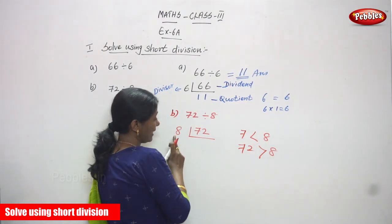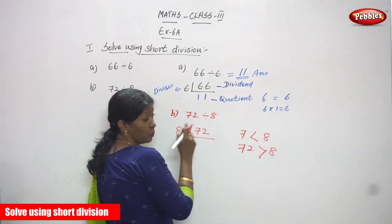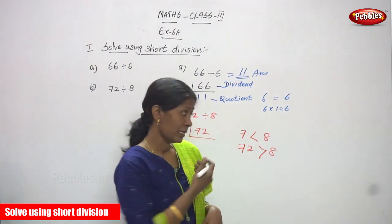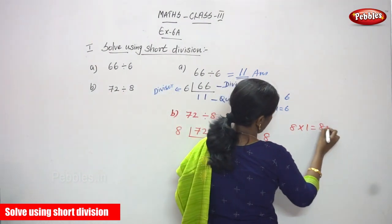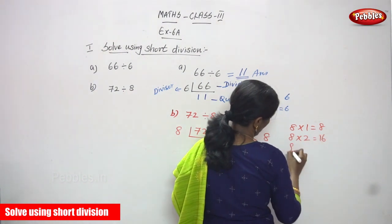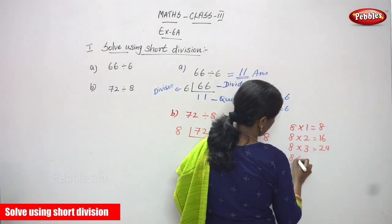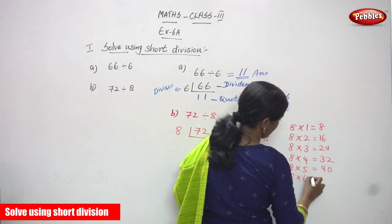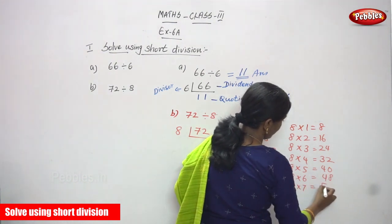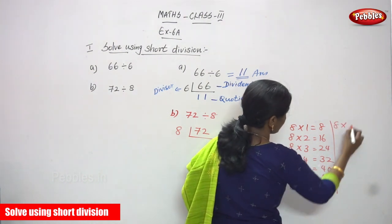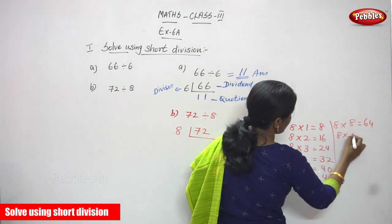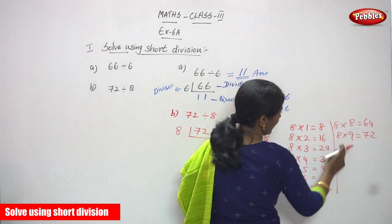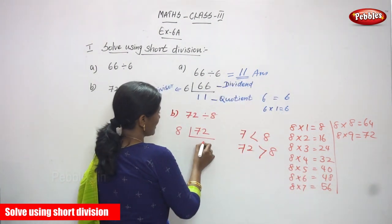You must use the 8 times table to find how many times 8 goes into 72. The 8 table: 8 ones are 8, 8 twos are 16, 8 threes are 24, 8 fours are 32, 8 fives are 40, 8 sixes are 48, 8 sevens are 56, 8 eights are 64, 8 nines are 72. So 8 nines are 72.